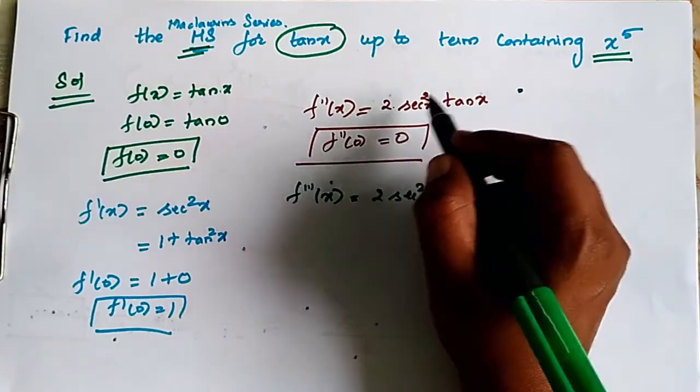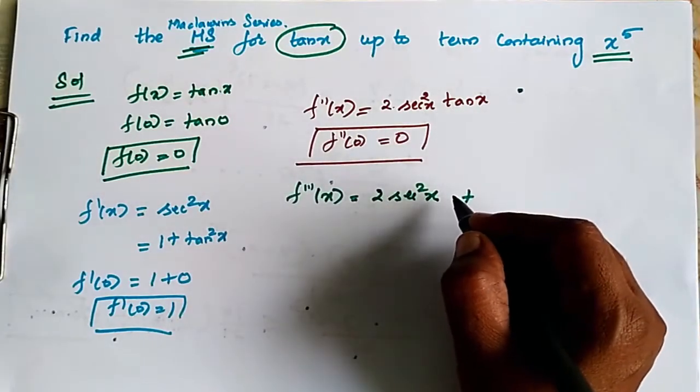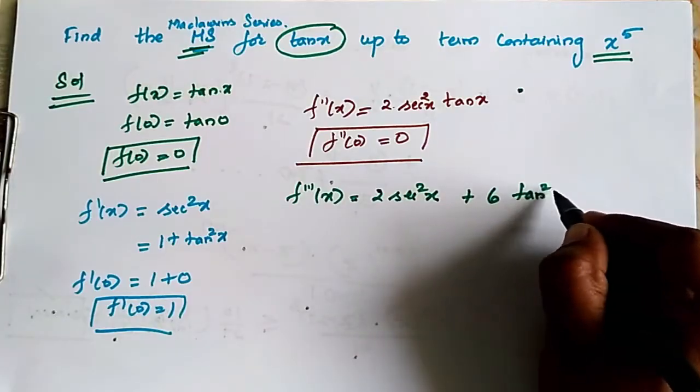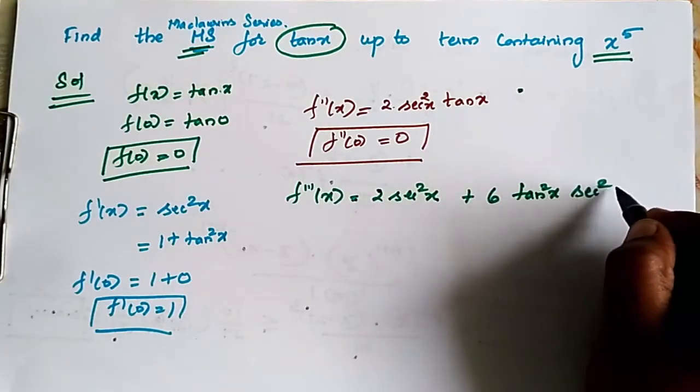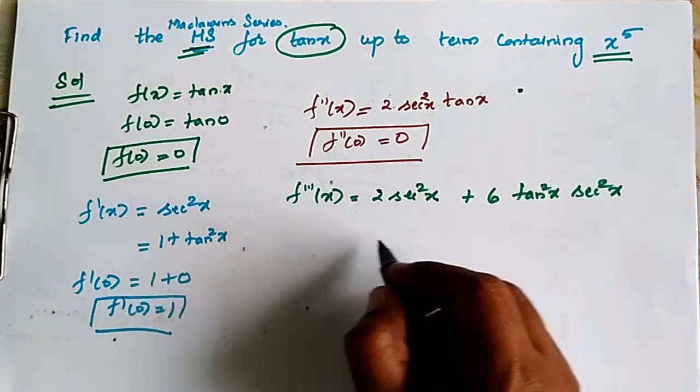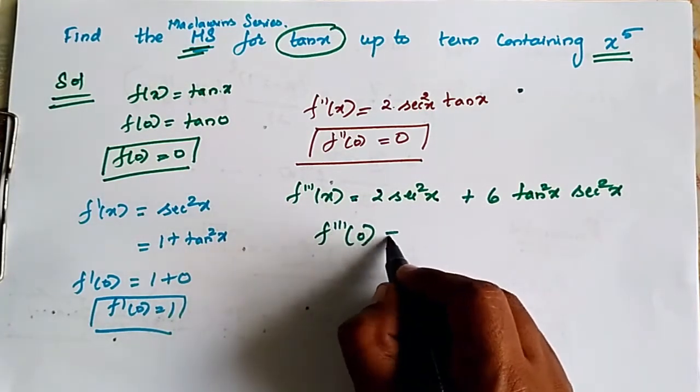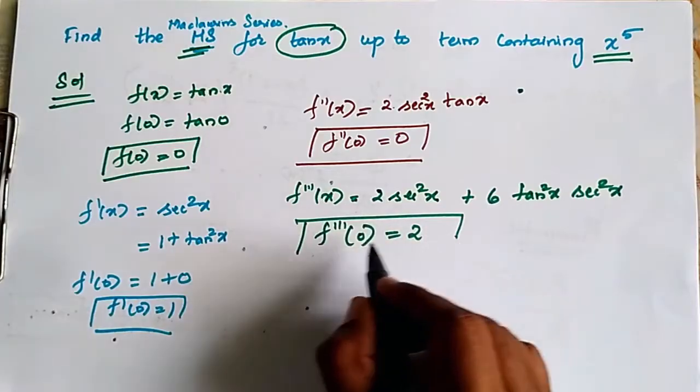which is secant square x. So you will get 2 secant square x plus 6 tan square x secant square x. Substituting the value 0, f triple dash of 0 is equal to 2.